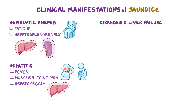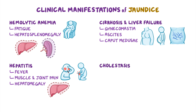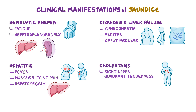Cirrhosis and liver failure may also cause gynecomastia, or breast tissue enlargement in clients assigned male at birth, as well as ascites, or abnormal accumulation of fluid in the abdomen, and caput medusae, or engorged veins in the abdomen radiating from the umbilicus. Finally, cholestasis is typically associated with right upper quadrant tenderness. In addition, clients may present with dark urine or pale stools.